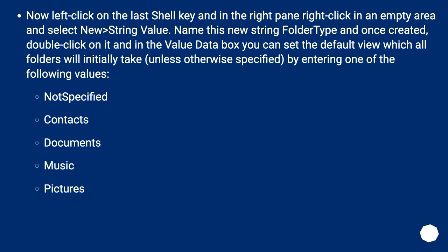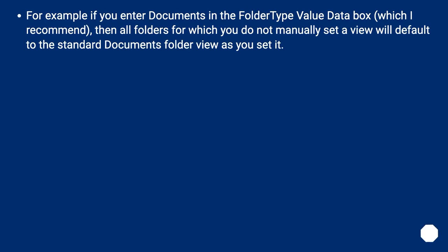Now left-click on the last Shell key, and in the right pane right-click in an empty area and select New String Value. Name this new string FolderType, and once created, double-click on it. In the Value Data box you can set the default view which all folders will initially take, unless otherwise specified, by entering one of the following values: NotSpecified, Contacts, Documents, Music, or Pictures. For example, if you enter Documents in the FolderType value data box — which is recommended — then all folders for which you do not manually set a view will default to the standard documents folder view.